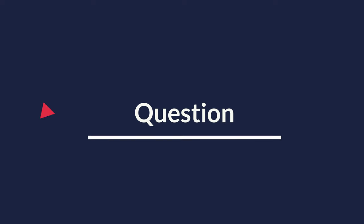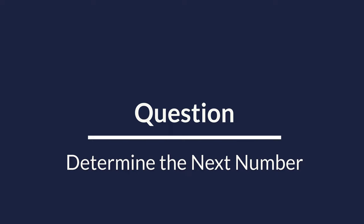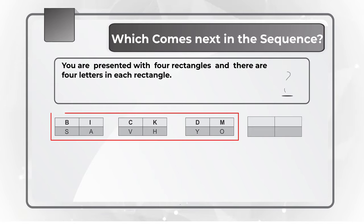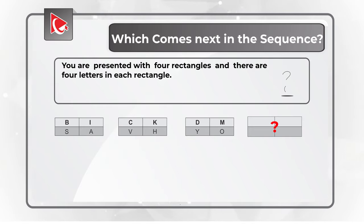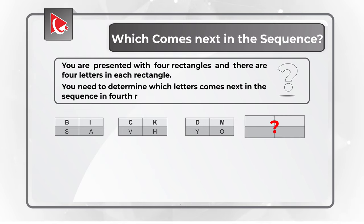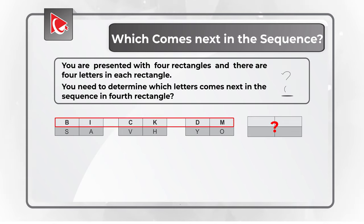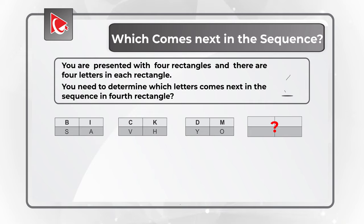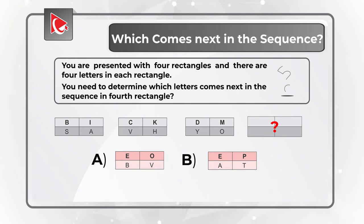Here is one of my favorite questions where you need to determine the next item in the sequence. You are presented with 4 rectangles, each containing 4 letters. Three rectangles contain letters and you need to determine the letters in the 4th rectangle. The upper row of letters is bold, and the lower row is regular font. You need to select from choices A, B, C, and D.